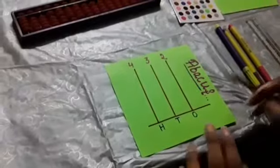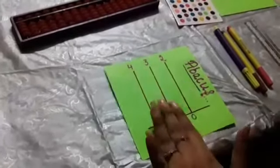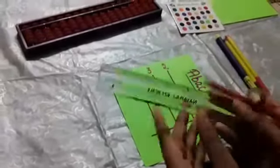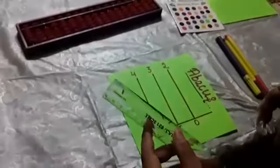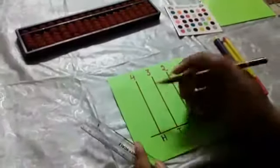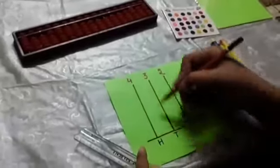Firstly, we will put a colored paper on a scale or a sketch pen or a colored pen. We will put one horizontal line and three vertical lines.